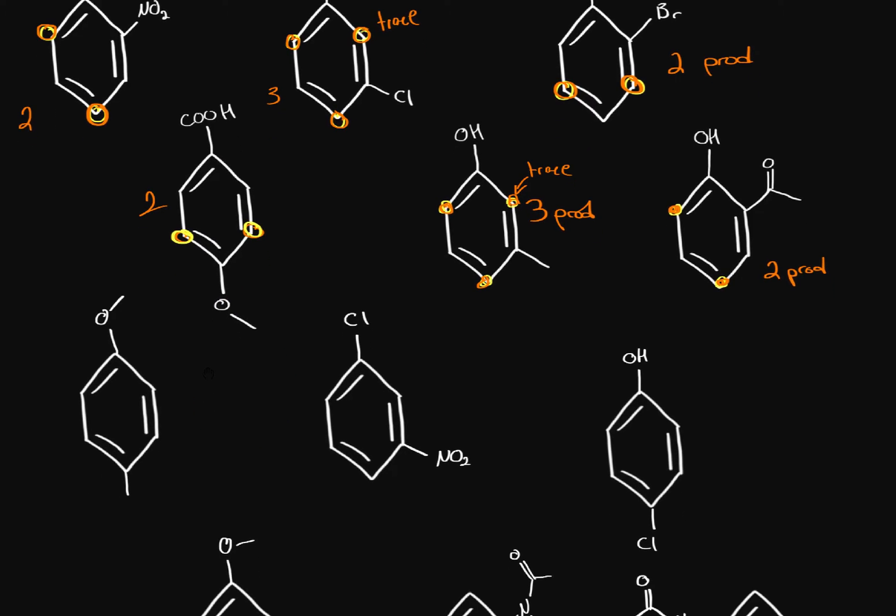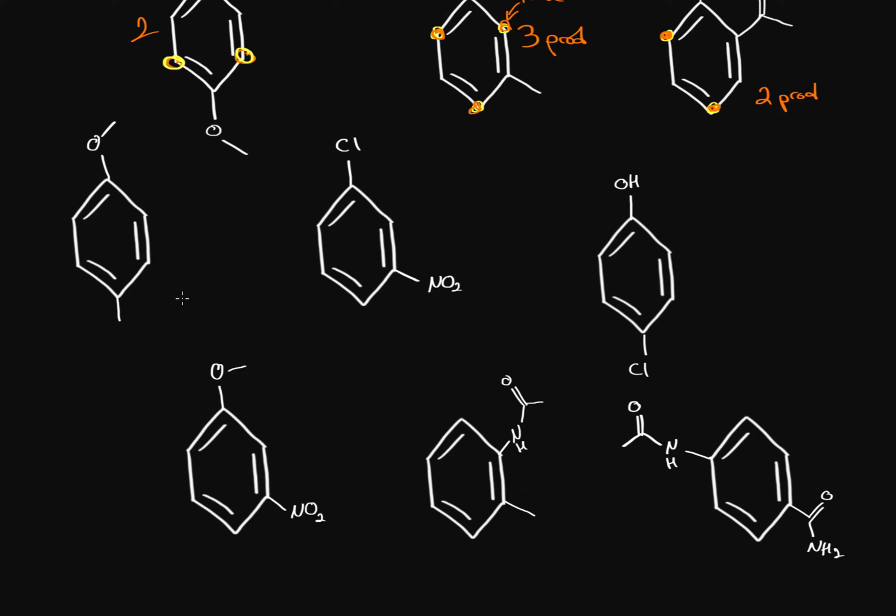Now what happens if substituents compete with each other? You prefer the ortho and para directing substituents. Also, if they're activating — meaning they're not halogens, but rather ethers or methyls — those are even more favored than halogens. So when you have activating ortho and para directors (electron donors), those are preferred. If you have two ortho and para directors, the better director will be preferred.